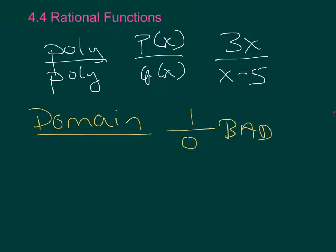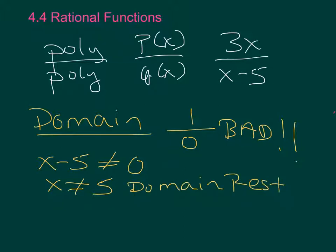So I'm going to set x minus 5 and say that cannot equal zero. The whole denominator cannot equal zero. So x cannot equal 5. This is my domain restriction. Just set your denominator not equal to zero, and then tell me what x cannot be.